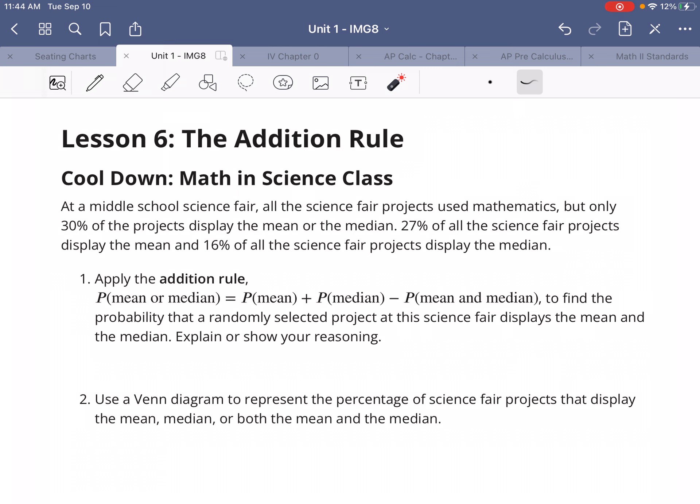So let's apply the addition rule. The probability of mean or median would be the probability of the mean plus the probability of the median minus the probability of both.